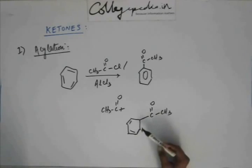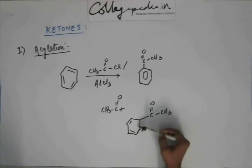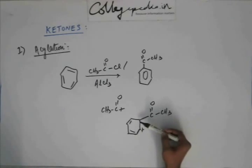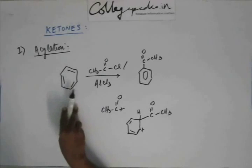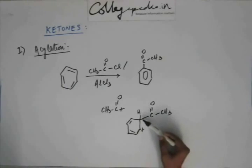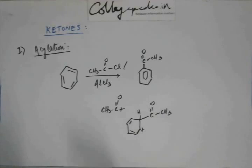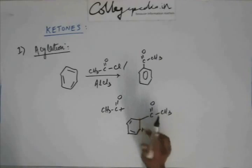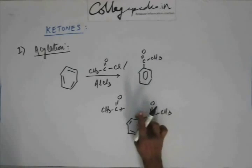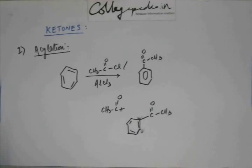To restore aromaticity, if there is a plus charge, a pi bond has to be generated. If there is a plus charge on this carbon, there has to be a negative charge on an adjacent carbon for that plus-minus to form a bond. This carbon has a hydrogen. If a base comes and abstracts this hydrogen as H⁺, then this carbon will have a negative charge, and this negative and this positive will form a bond, restoring the aromatic ring. This is the mechanism of acylation.